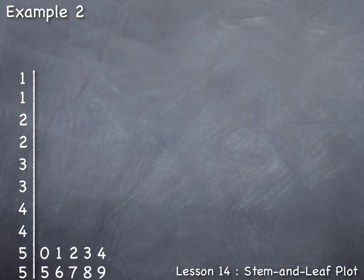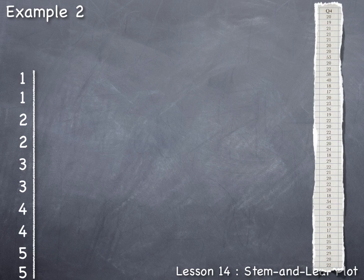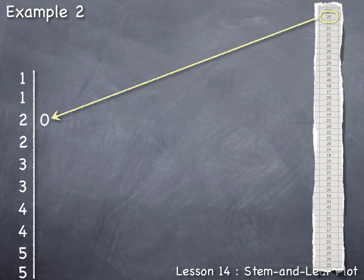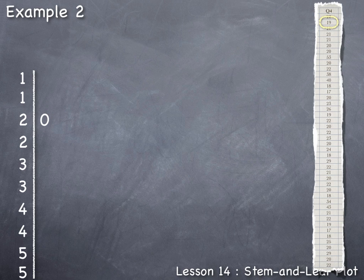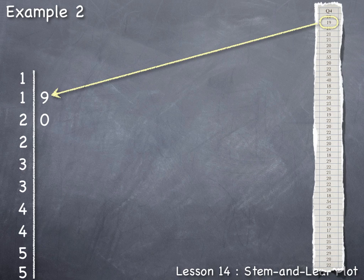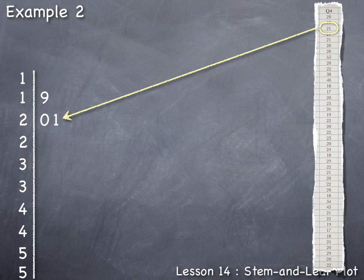With the double stem approach we'll have 10 stem values, which is also neither too few nor too many, so let's use this choice. The first student was 20 years old — stem value 2, leaf value 0 — plotted next to the first instance of stem 2. The second student was 19 — stem value 1, leaf value 9. Since 9 is in the upper half of digits, the 19-year-old is plotted next to the second instance of stem 1. The next student was 21, displayed next to the first instance of stem 2 with leaf value 1.